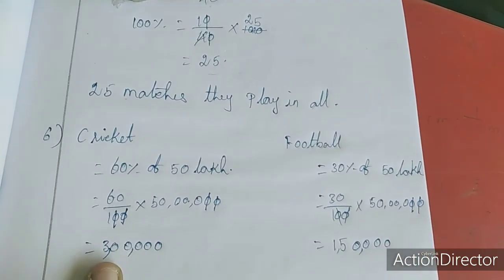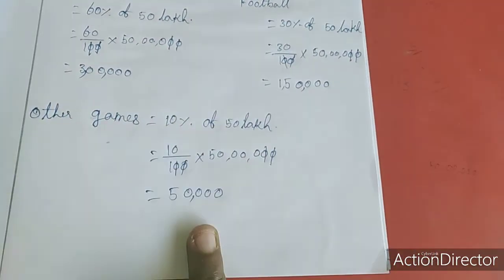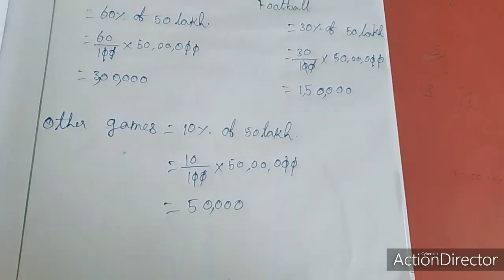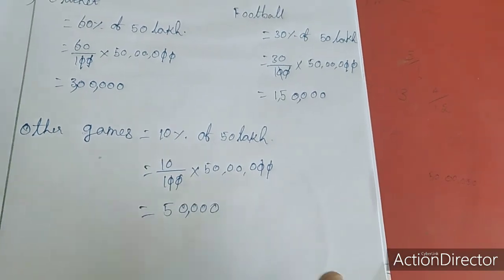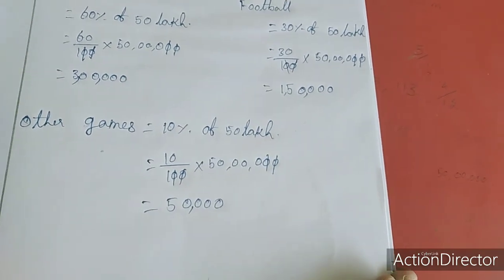Cricket: 3,00,000. Football: 1,50,000. Other games: 50,000. This is the answer for sixth sum. After this, exercise 8.2 has come over. You have to copy in your notes. Do the fifth sum as homework. Thank you, dears.